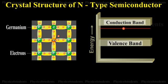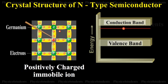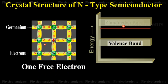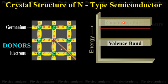Each impurity atom donates one free electron to the semiconductor. These impurity atoms are called donors.